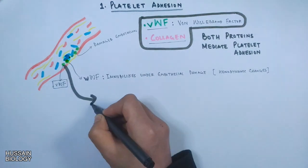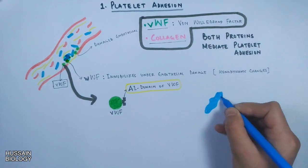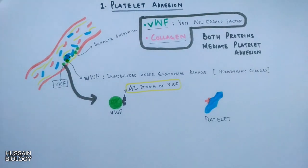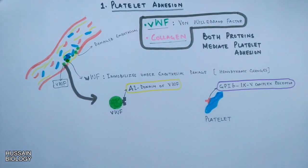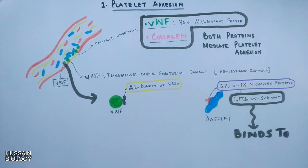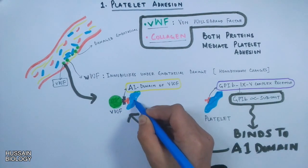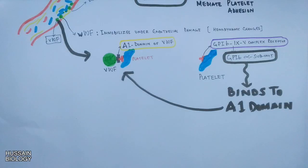The VWF molecule has an A1 domain in its structure, while on the platelets we have the GP1b-IX-V complex, which has a GP1b-alpha subunit. It is this alpha subunit which binds to the A1 domain of VWF. So VWF grabs the platelet via A1–GP1b-alpha subunit binding. This is how VWF mediates the adhesion of platelets.